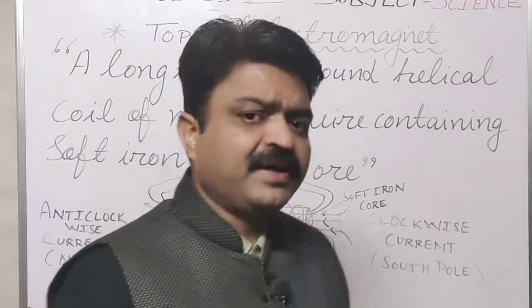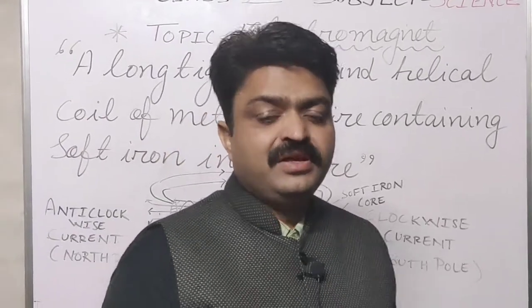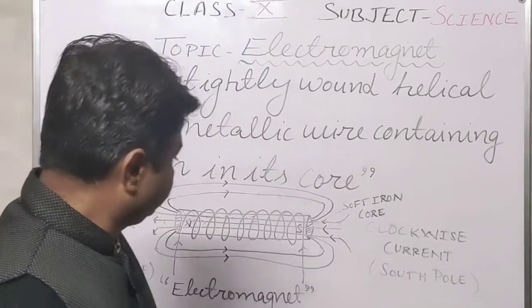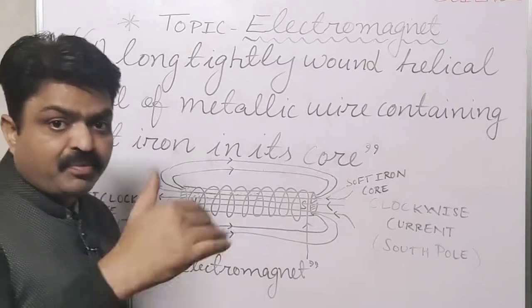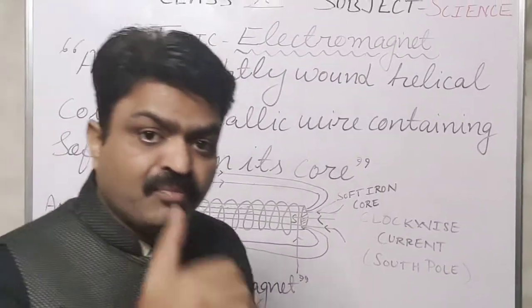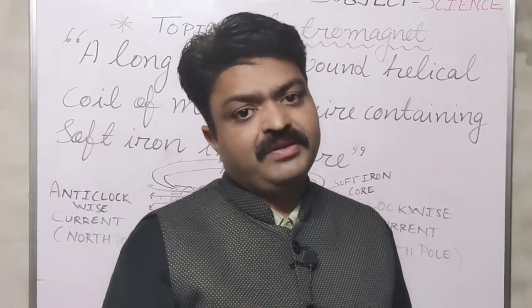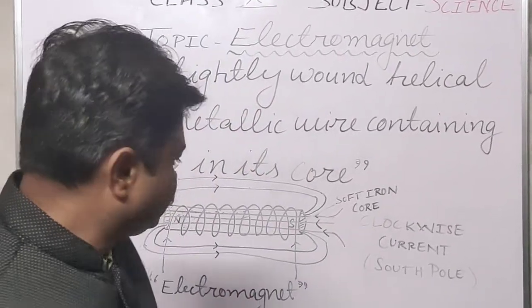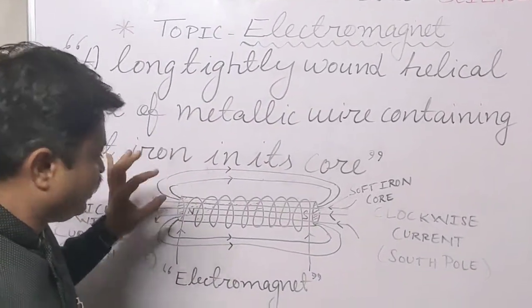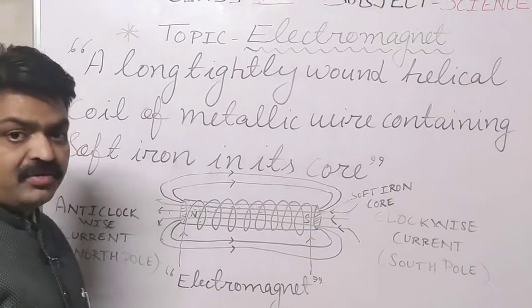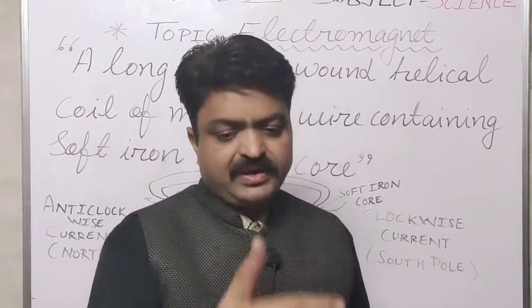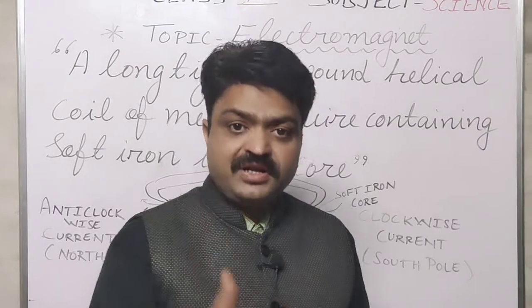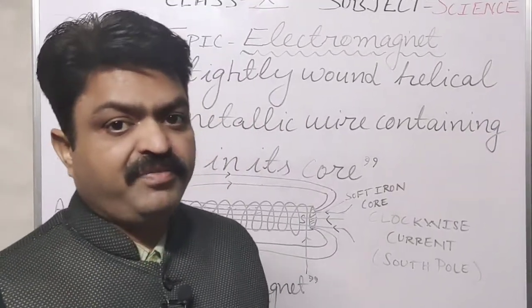When current is passed through this wire, it produces more magnetic field than a solenoid. This is because the soft iron rod also behaves like a magnet and it also increases the magnetic field.